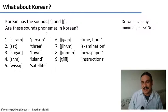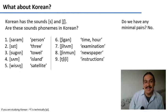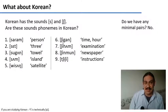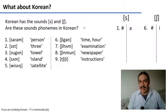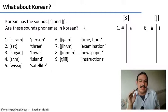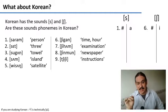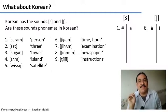No, we don't have any minimal pairs. If we had something like sigan, for example, then it would be a minimal pair with shigan, and we would know that /s/ and /ʃ/ are two different phonemes that can change the meaning of a word. But we don't see that. So if we don't find minimal pairs, the next thing we need to do is try to figure out the environments for the different sounds.